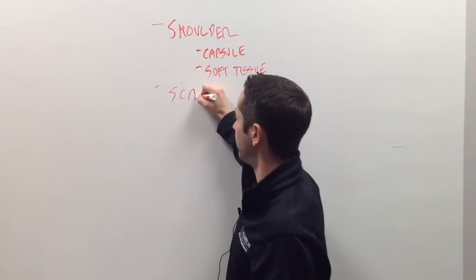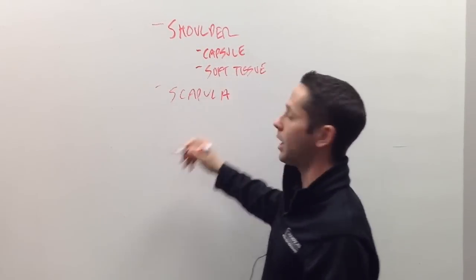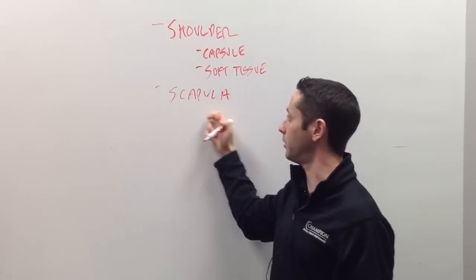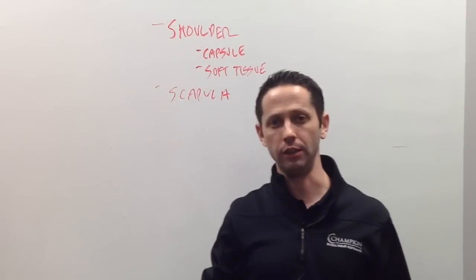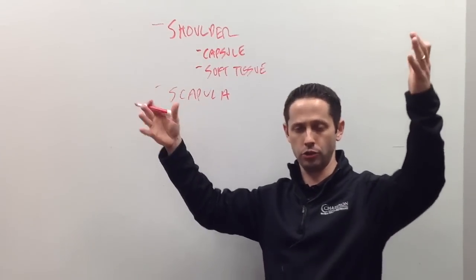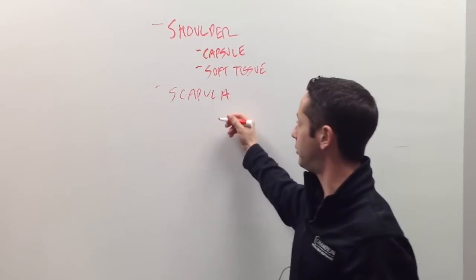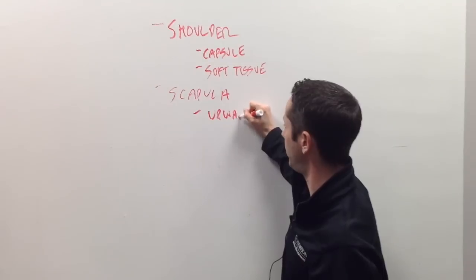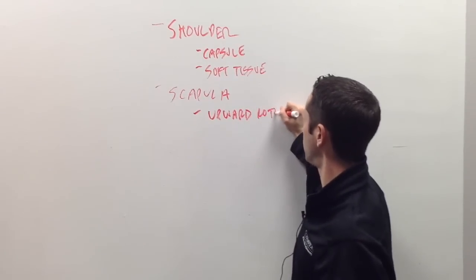That's the shoulder, that's glenohumeral motion in there. The next thing is obviously then the scapula. So if you can't raise your arm overhead, maybe it's because the shoulder doesn't have full mobility. Maybe it's because the scapula doesn't have full mobility. And when we see loss of mobility for overhead shoulder motion for the scap, it's usually because we lose the ability to upwardly rotate. So we'll call that upward rotation.